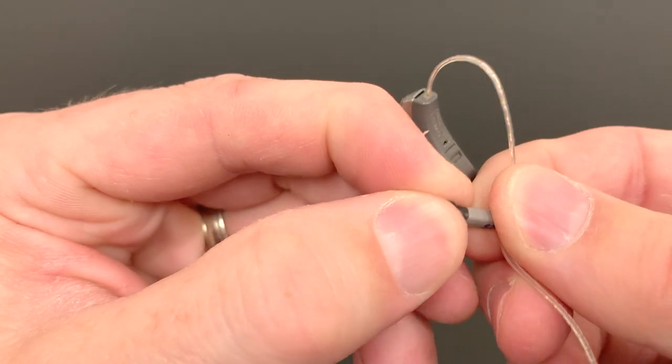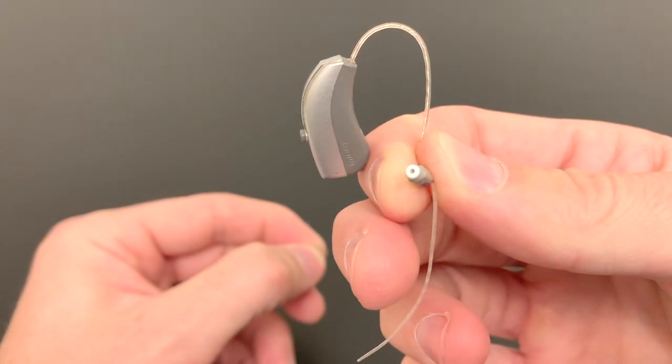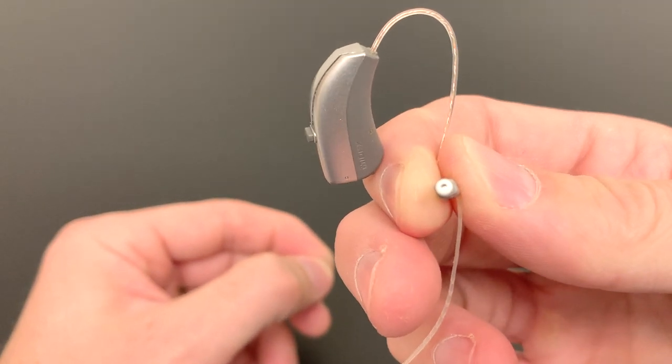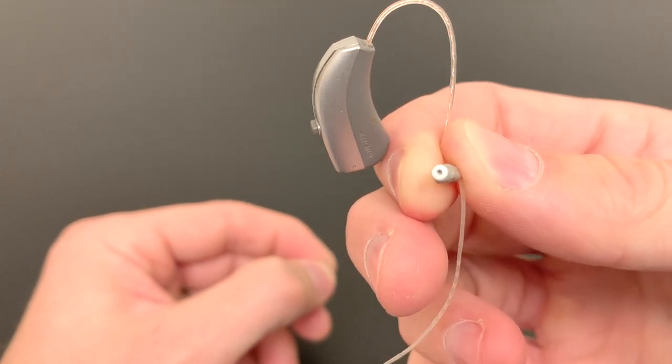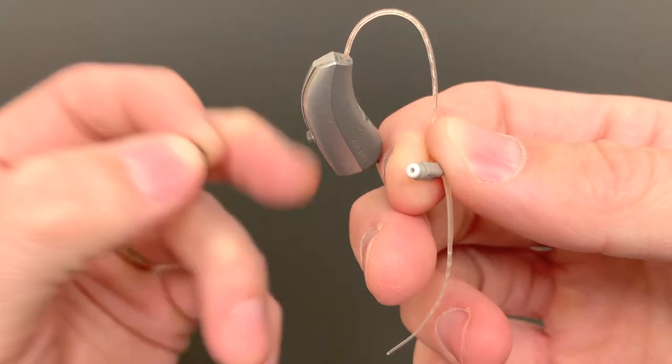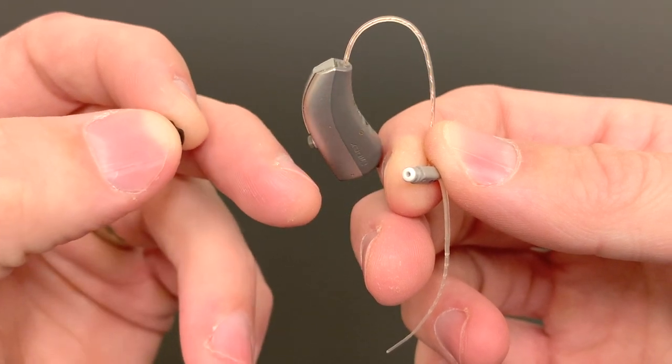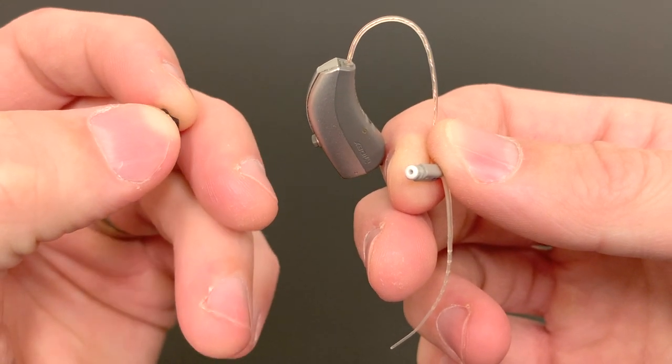And underneath the dome, if you squeeze and pull, is what we call a wax guard. Now, the wax guard is the number one reason why we get a phone call about my hearing aid's not working. That gets plugged up with ear wax at times. And in another video, I'm going to show you how to change that and keep it clean.